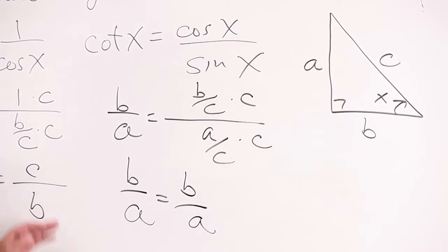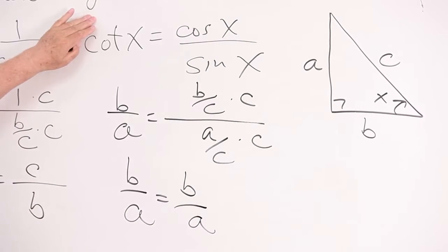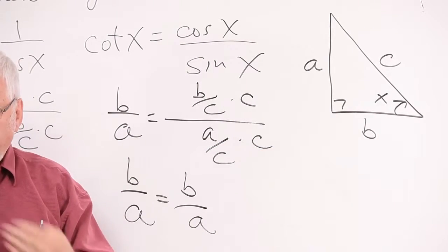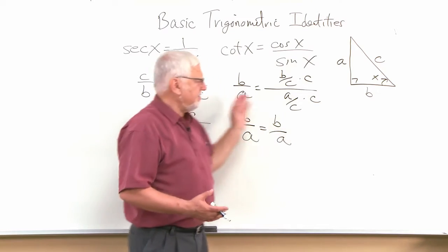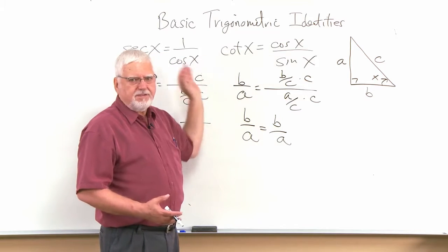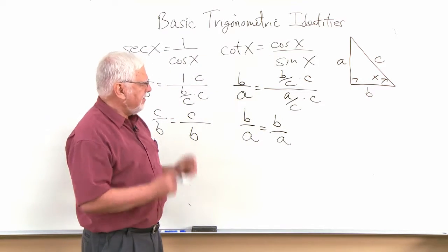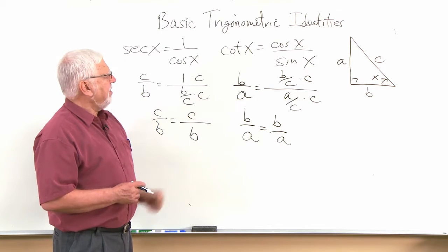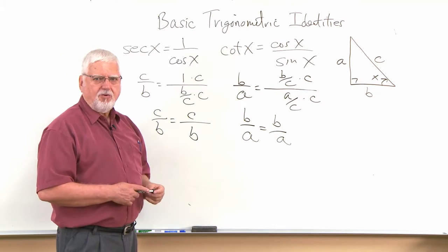So you prove the basic trig identities by using the definition of the trig functions. When you're verifying identities you don't go back to the definition, you use these to build on that. And so there is a distinct difference there. And so you can try all the other ones, but you'll have some in your video homework to try.